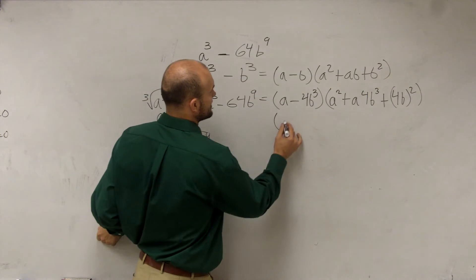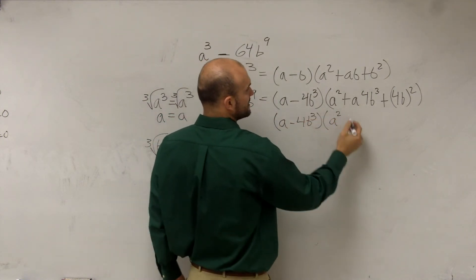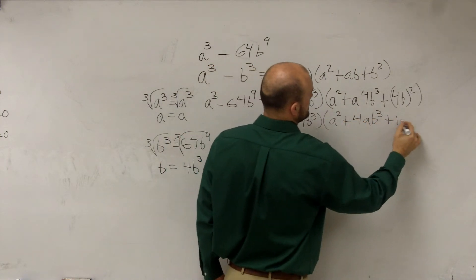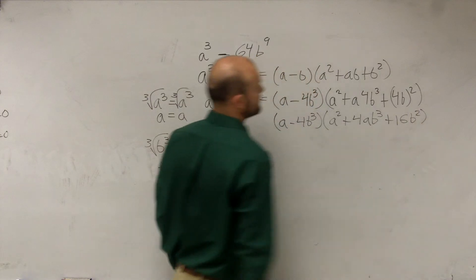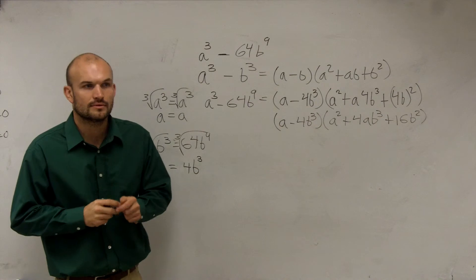So now to simplify this, I have a minus 4b cubed times a squared. This becomes plus 4ab cubed plus 16b squared. And then now that is your final factored form.